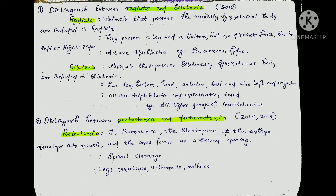First question is: distinguish between Radiata and Bilateria. Radiata are animals that possess a radially symmetrical body. They possess a top and bottom but no distinct front, back, left, or right sides. All are diploblastic — for example, sea animals like Hydra. Radiata is a group of animals in which the animals have radial symmetry.